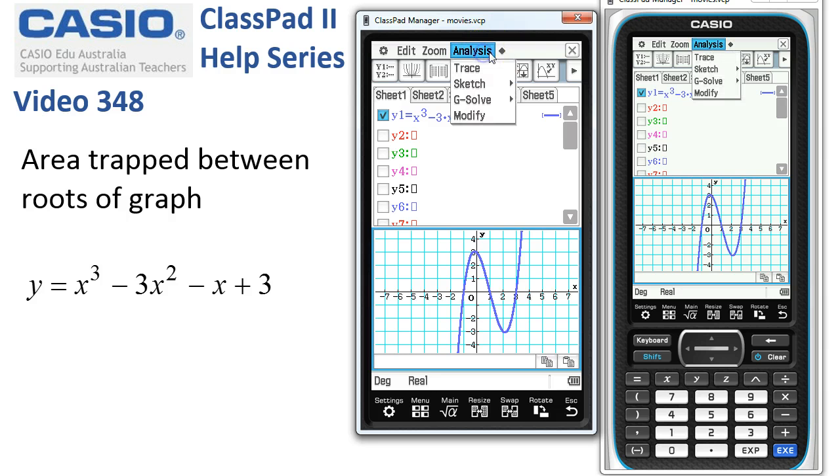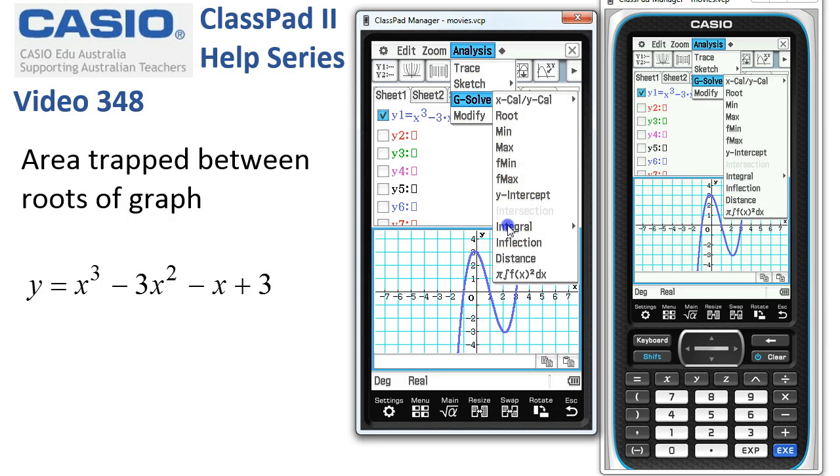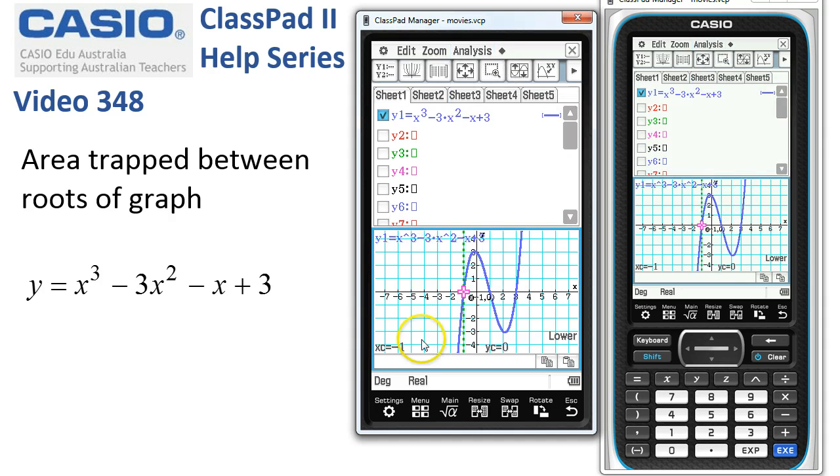Off we go: analysis, g-solve, integral, and we choose the root option. ClassPad first comes in at the very left-hand feature as usual, and to select that root we tap execute.